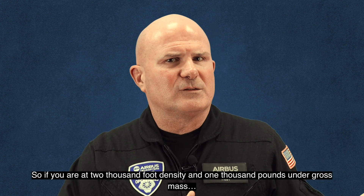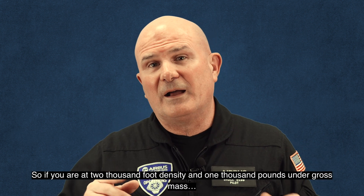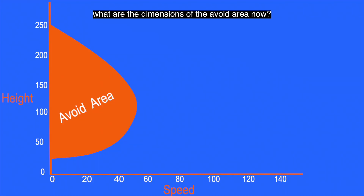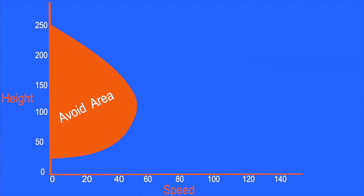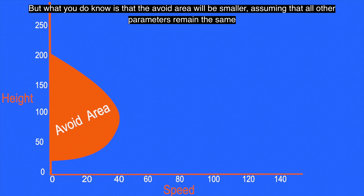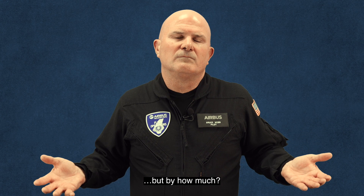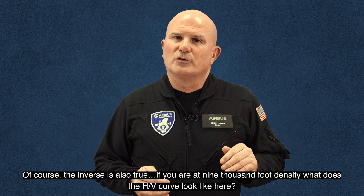So if you are at 2,000 foot density altitude and 1,000 pounds under gross mass, what are the dimensions of the avoid area now? You may not know. But what you do know is that the avoid area will be smaller, assuming that all other parameters remain the same. But by how much? Of course, the inverse is also true.